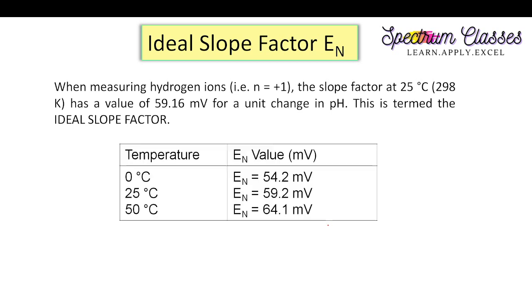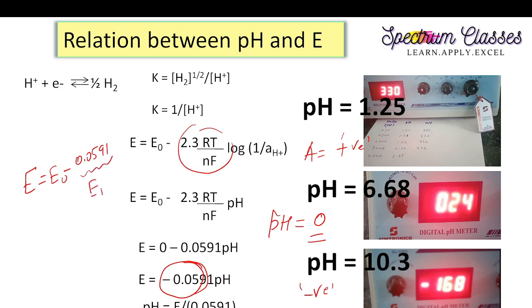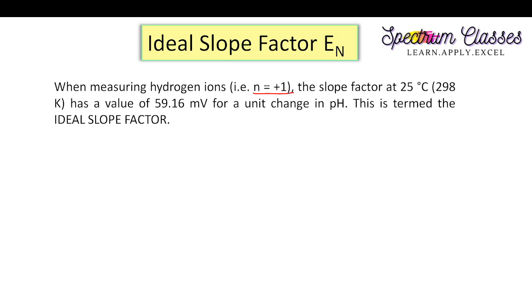Now, what is called the ideal slope factor? This value — the coefficient of pH in the equation E = E⁰ − (2.303RT/nF)·pH — is known as the slope factor. At temperature 25°C (298 K), with n = +1 for hydrogen ion measurement, the slope factor has the value 59.16 millivolts per unit change in pH. This is termed the ideal slope factor.